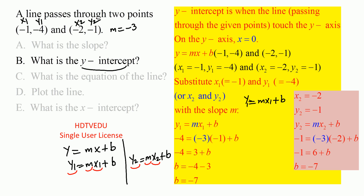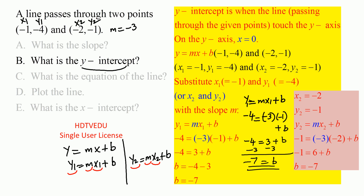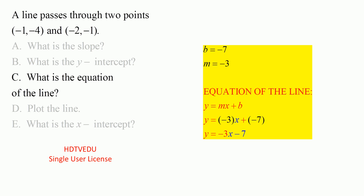y1 is negative 4, so: negative 4 equals negative 3 times negative 1 plus b, which gives negative 4 equals positive 3 plus b. Subtract 3 from both sides and you get b equals negative 7. Checking with the second point: negative 1 equals negative 3 times negative 2 plus b, so negative 1 equals 6 plus b, giving b equals negative 7. The y-intercept is negative 7, and the y-intercept point is (0, negative 7).